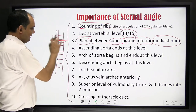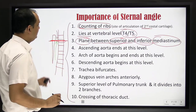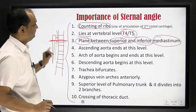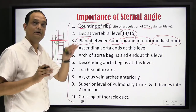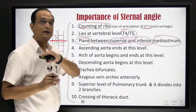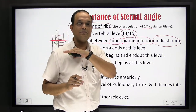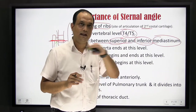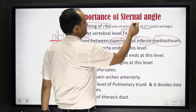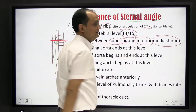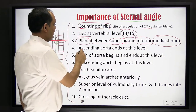So this is a basic point you must know: whenever we are dividing the mediastinum into superior and inferior mediastinum, the plane that separates them passes anteriorly from the external angle. This ascending aorta ends here — meaning when you look at the heart, the ascending aorta is the large vessel coming from the heart.